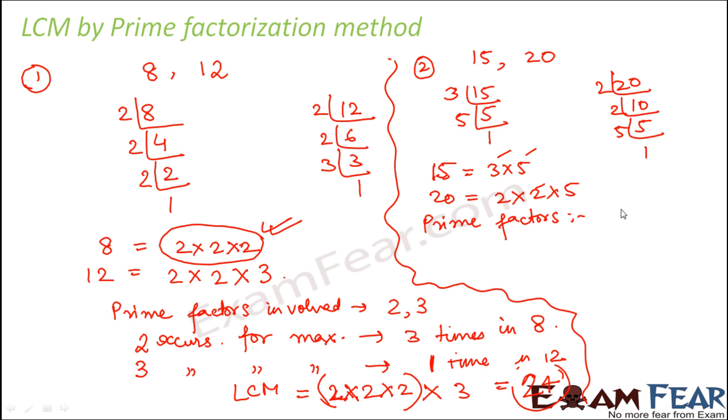3, 5 and 2. So 2, 3, 5 are the prime factors which are involved in this case. So where 2 occurs maximum number of times?